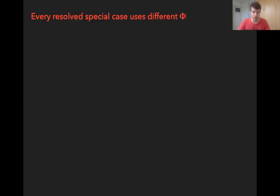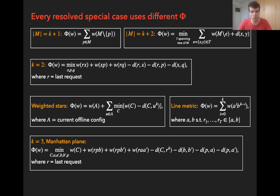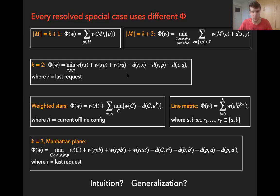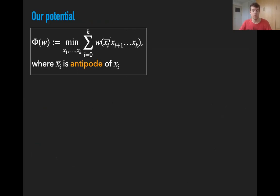Previous proofs gave a different potential for every single special case where it is known that the work function algorithm is k-competitive. There's a list summarizing all these potential functions for all these cases, and as you can see, I don't want you to read all these potentials — it's just to give an impression that the situation so far has been kind of a mess. There's no clear intuition for many of these potential functions, and if we want to solve the k-server conjecture on general metric spaces, we would seem to need some generalization of these potential functions.